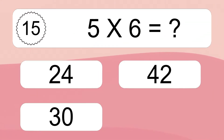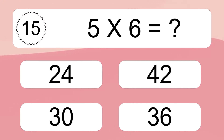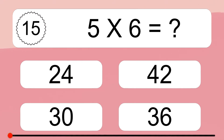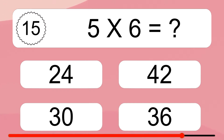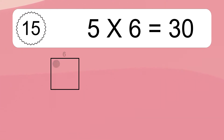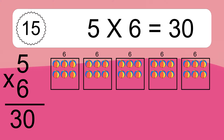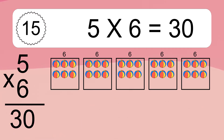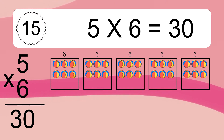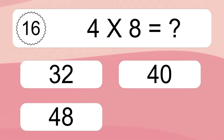5 times 6 equals what? 5 times 6 equals 30. We have 5 boxes, and each box has 6 colorful balls inside. If you count all the balls in all the boxes together, you will have 5 times 6 balls. This equals 30 balls.